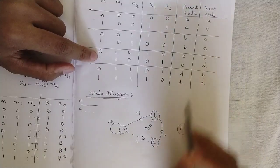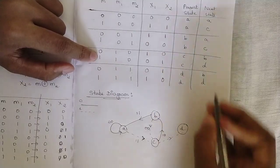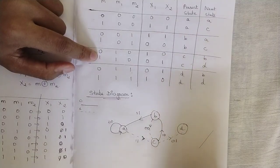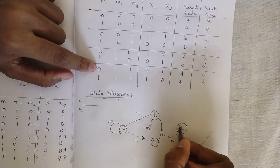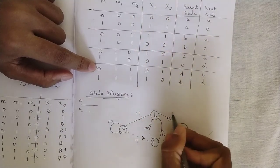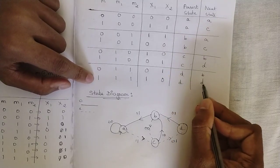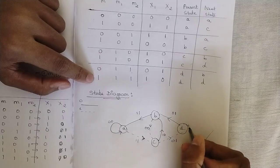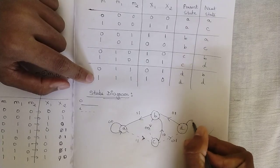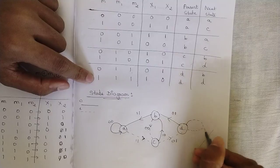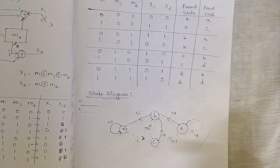When present state is C and input m=1, next state is D — draw a dotted line from C to D with output 01. When present state is D and input m=0, next state is B — draw a bold line from D to B with output 01. When present state is D and input m=1, next state is D itself — draw a dotted self-loop from D to D with output 10.